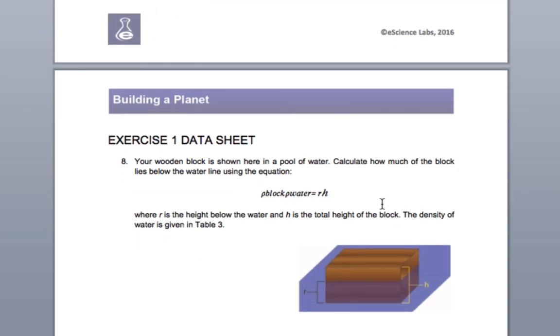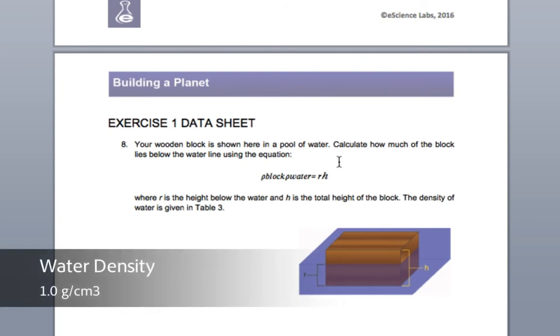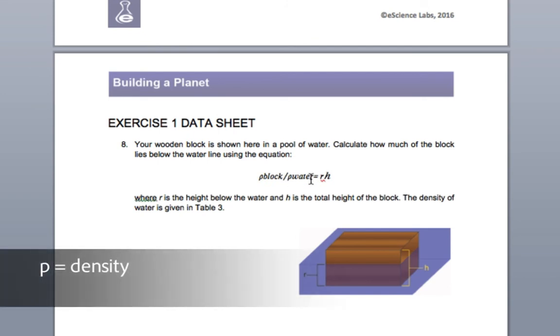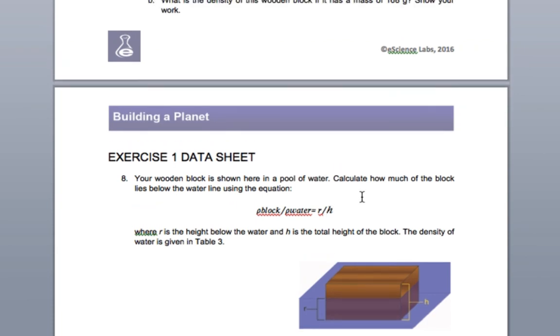One of the things about this question number eight here, they give you the mass. They give you basically the volume of the block here. This is a wood block. They give you the mass. So you can just determine the volume. Here's the mass. The mass over the volume will give you the density. So that's how you figure out this density.